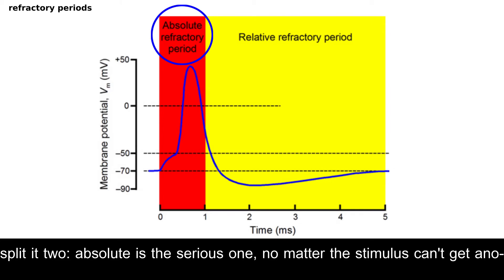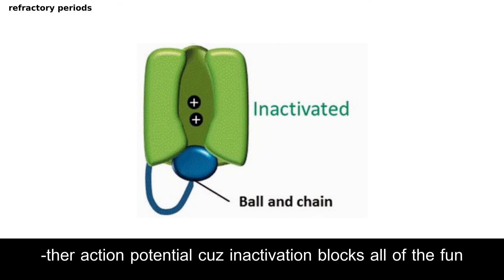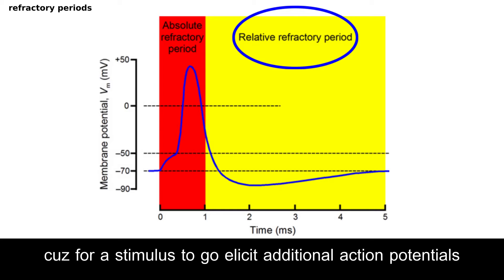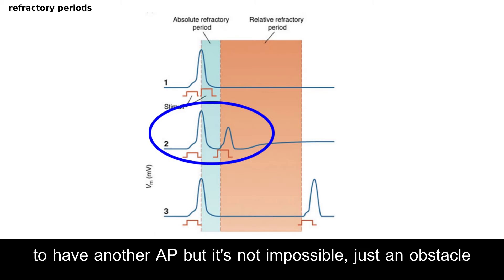Absolute is the serious one. No matter the stimulus, can't get another action potential 'cause inactivation blocks all of the fun. That's absolute period. It's different for relative, 'cause for a stimulus to go elicit additional action potentials, it needs to be great in intensity. Here the neuron has a lower propensity to have another AP, but it's not impossible, just an obstacle.